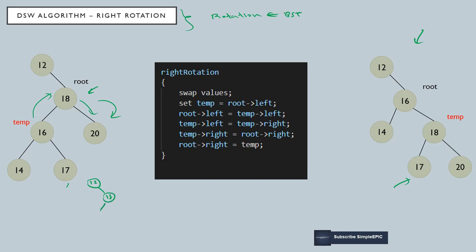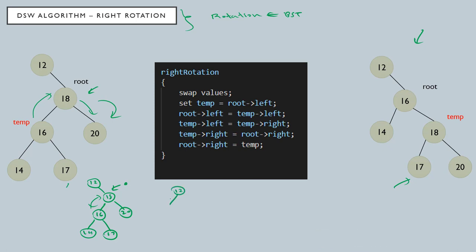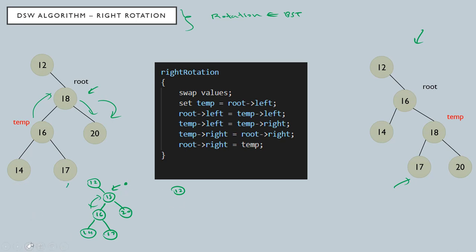This is our initial tree — let's say with nodes 14 and 17. We need to perform a rotation here. What basically happens is: first, 16 and 18 will be swapped. That is the first step of our right rotation — swap.